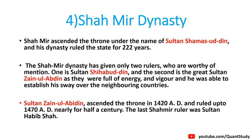The Shahamir dynasty's most notable rulers were Shahabuddin and Zainul Abdin. The Shahamir dynasty also expanded by annexing neighboring cities and countries.